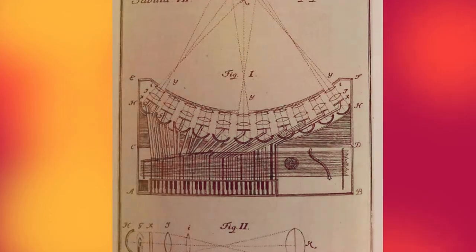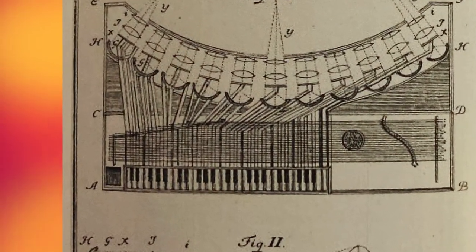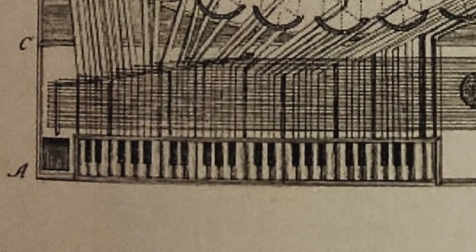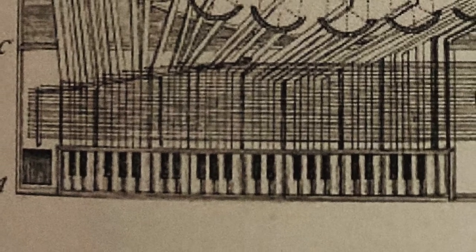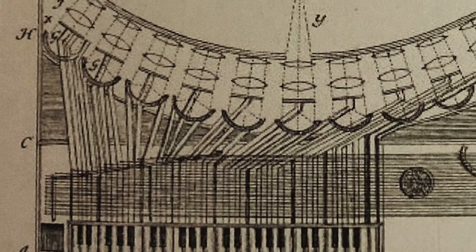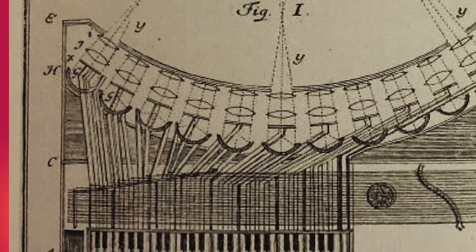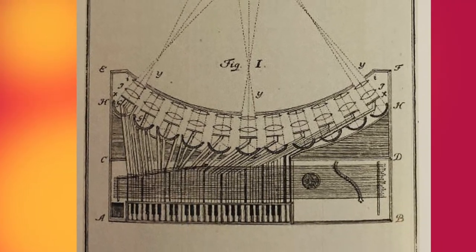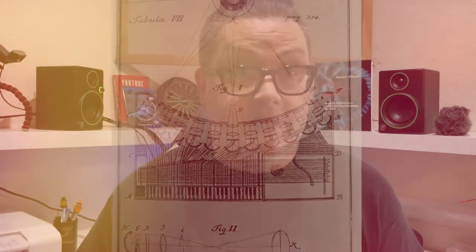The year is 1725. Louis Bertrand Castel conceived the first ocular harpsichord. It was not until 1735 that the first ocular harpsichord was made, and with it the start of visual music. To play it, one would press a key with a finger, thereby opening a valve that produces the chosen tone. At the same time, fitted silken threads push or pull to uncover colored boxes with a painted lantern inside, so that a tone is heard and a color is seen simultaneously.